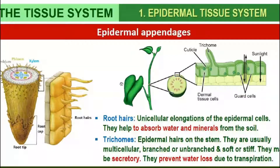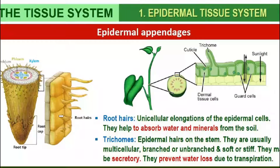Epidermal appendages are present on the epidermis and consist of two things. When these appendages are present in the root, they are known as root hairs. Root hairs help for the absorption of minerals and water.